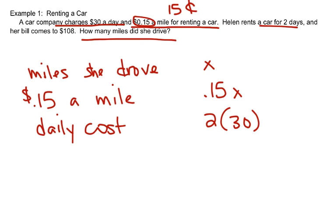So our daily cost should be two times the daily rate. And her total cost was $108. Remember the word total means added up, and it should equal that. So the mileage cost plus the daily cost should equal $108. That's your model.